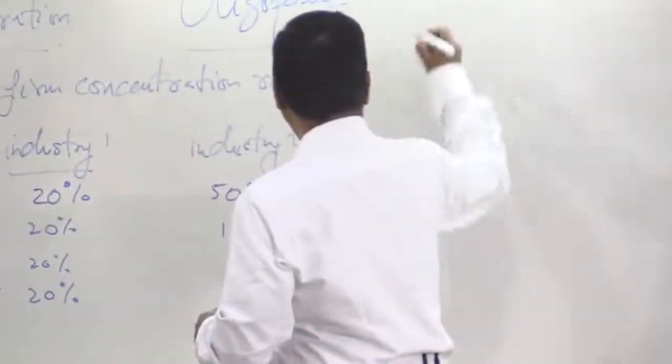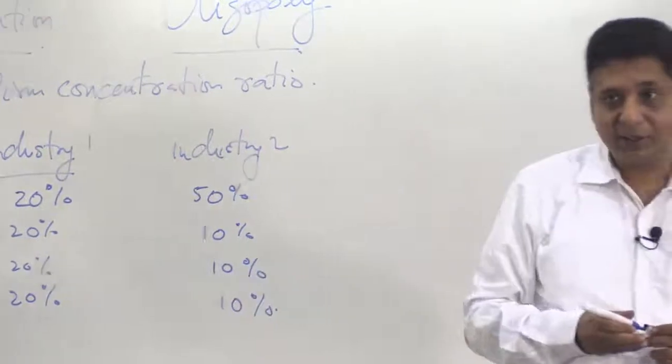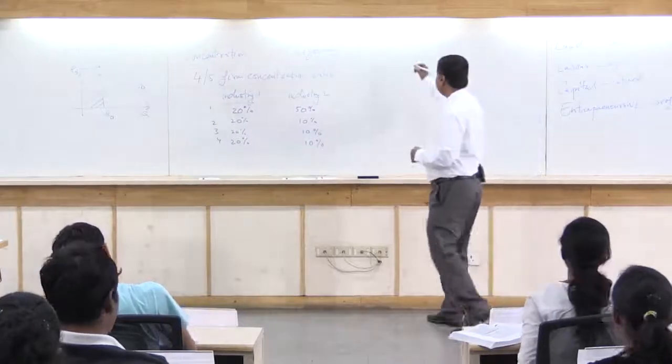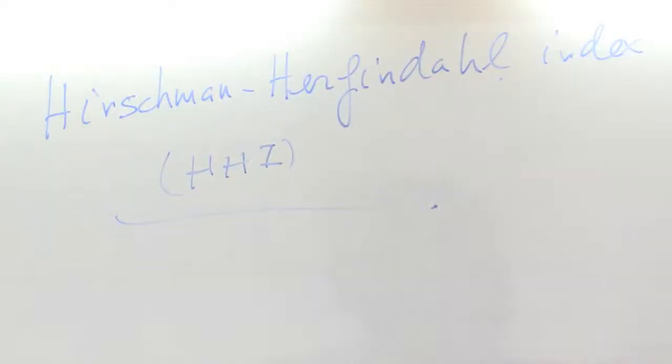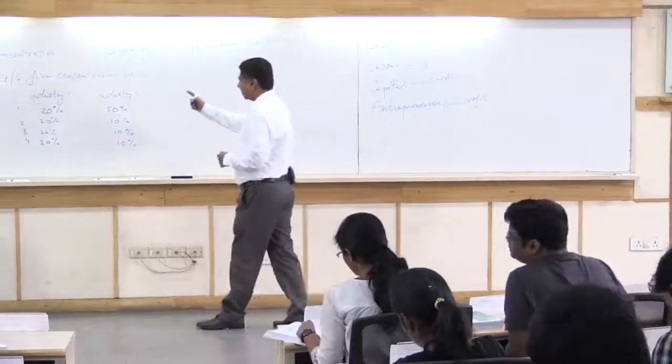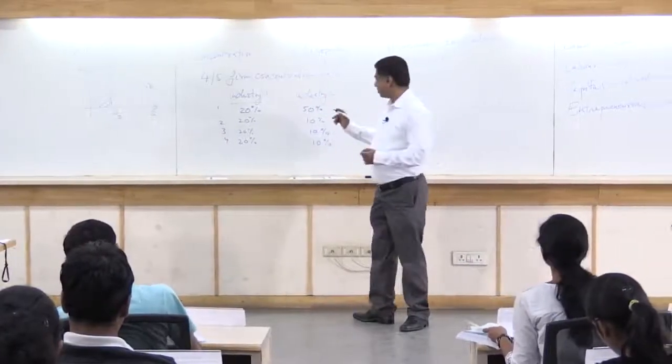To get around that, we have another way of measuring concentration, which is known as the Hirschman Herfindahl index and for obvious reasons, it is called HHI. What it does is, it takes the share of each firm and then squares it.